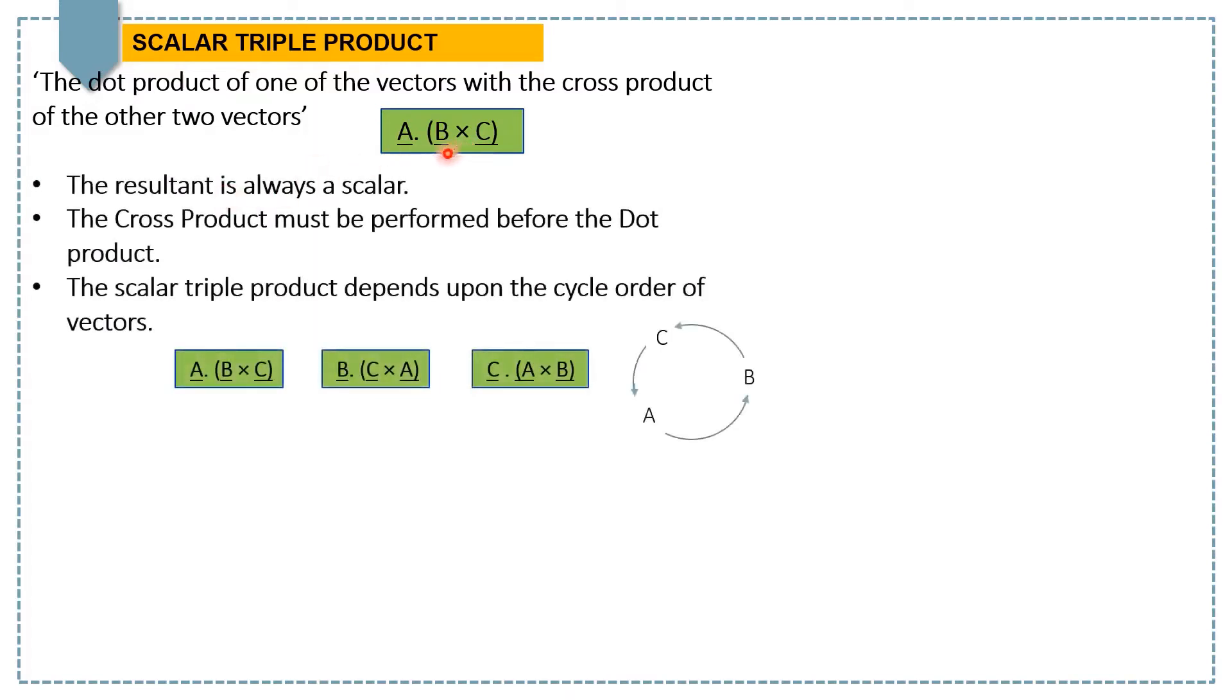As the name suggests, the resultant of A dot into B cross C will always be a scalar quantity. It involves dot and cross products, but it is necessary to perform the cross product before the dot product when we want to compute the scalar triple product.